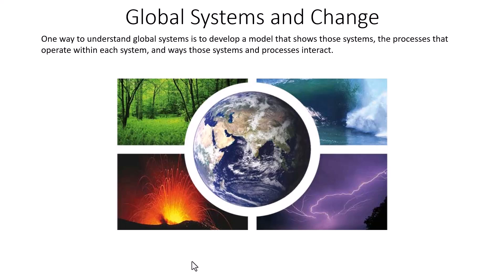One way to understand global systems is to develop a model that shows those systems, the processes that operate within each of them, and the ways those systems and processes interact. This image is going to depict not only the four global systems we're going to talk about, but also start painting a picture as to what influence these global systems have on each other.